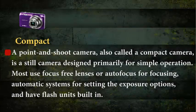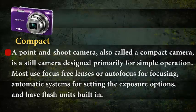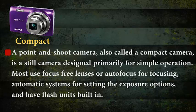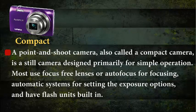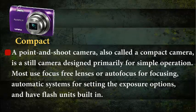Compact. A point and shoot camera, also called a compact camera, is an easy still camera designed primarily for simple operation. Most use focus-free lenses or auto focus for focusing, with automatic systems for setting the exposure options and have flash units built in.